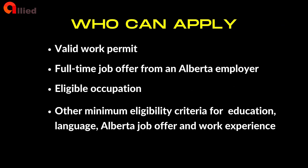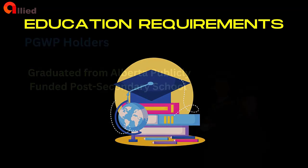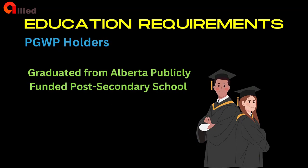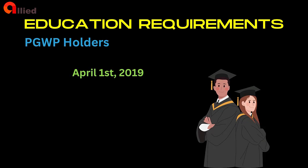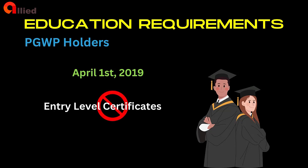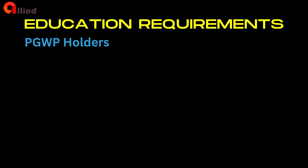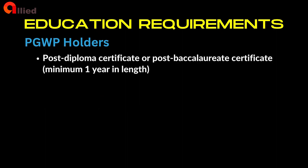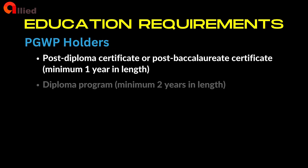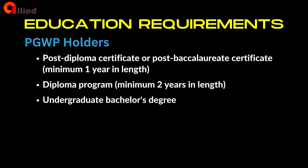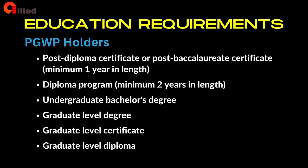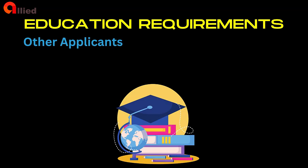Besides having a valid work permit and a full-time job offer from an Alberta employer in an eligible occupation, candidates must also meet other minimum eligibility criteria for education, language, Alberta job offer, and work experience. For Post-Graduation Work Permit holders, the credential must be issued by an Alberta Advanced Education publicly funded post-secondary institution. If you started attending an Alberta program on or after April 1, 2019, entry-level certificates are no longer eligible. Approved credentials include post-diploma certificate, post-baccalaureate certificate (minimum one year), diploma program (minimum two years), undergraduate bachelor's degree, graduate level degree, graduate level certificate, or graduate level diploma.